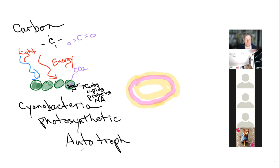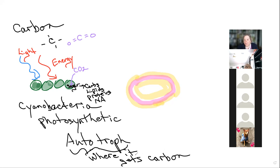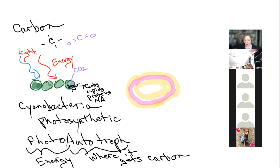This light energy allows the bacterium to pull in carbon dioxide (CO2) from the air. The bacterium takes the CO2 and makes sugar out of it, and from sugar it can make more complex carbohydrates, lipids, proteins, and nucleic acids. So basically this bacterium is self-feeding - it eats air. We call that an autotroph: 'auto' for self and 'troph' for eating. Because it gets its carbon from CO2 and energy from light, we say they are photo-autotrophs.